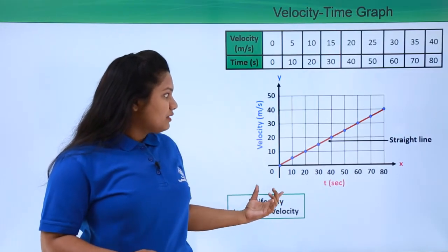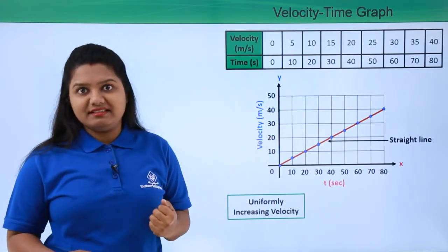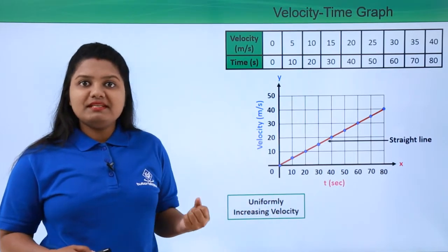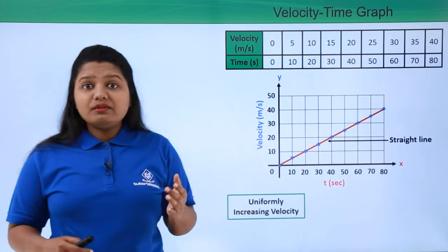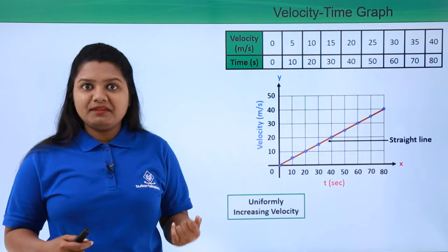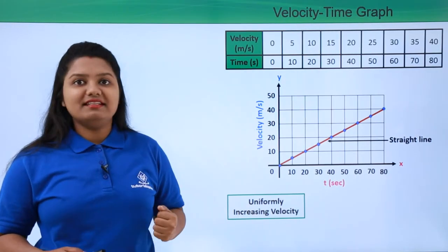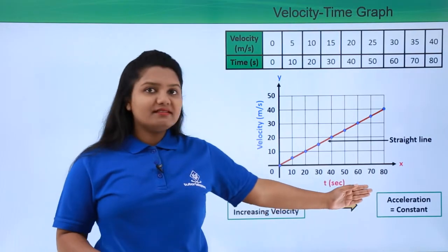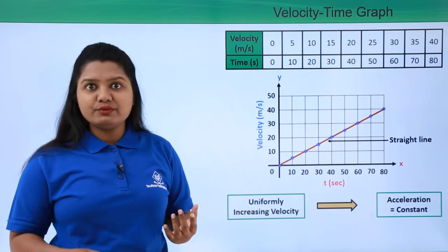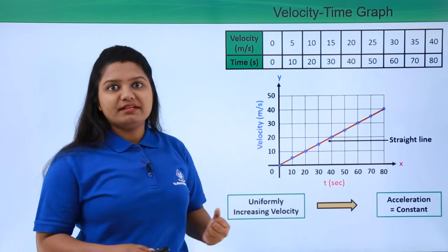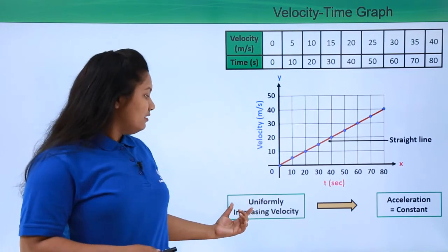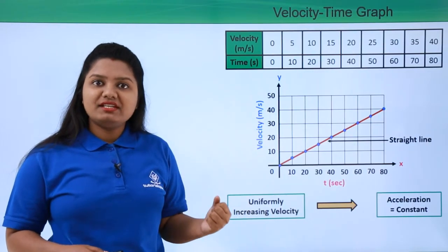Now let us find the nature of acceleration in this case. The body is moving with a uniformly increasing velocity, meaning a constantly increasing velocity. Since acceleration is the rate of change of velocity and the velocity is uniformly changing, the acceleration is constant. So whenever we see a velocity-time graph that is a straight line with a positive slope, the body has uniformly increasing velocity and constant acceleration.